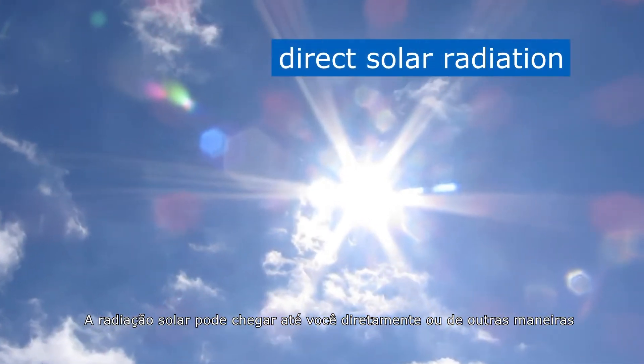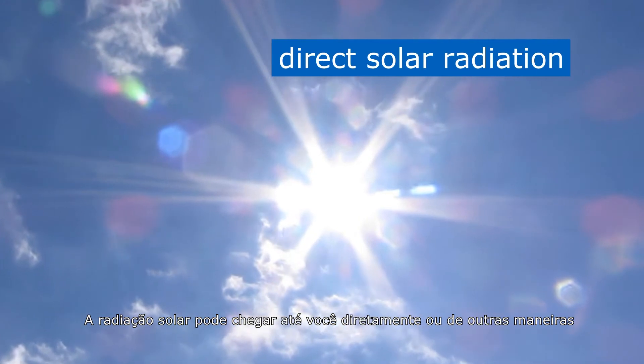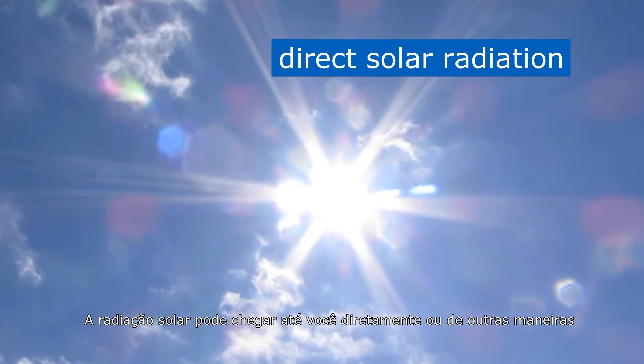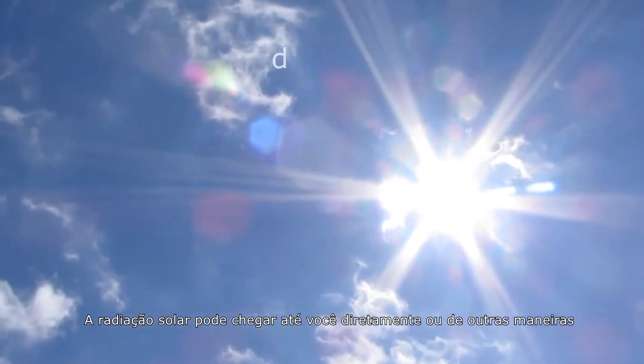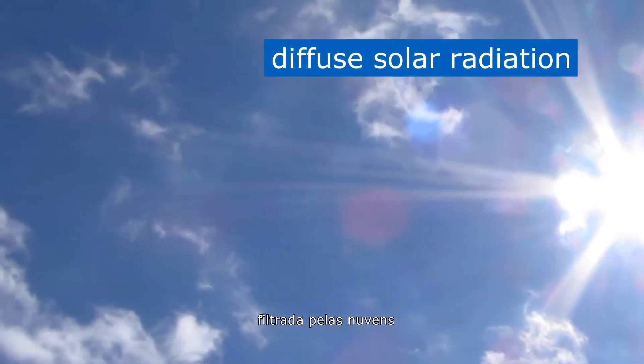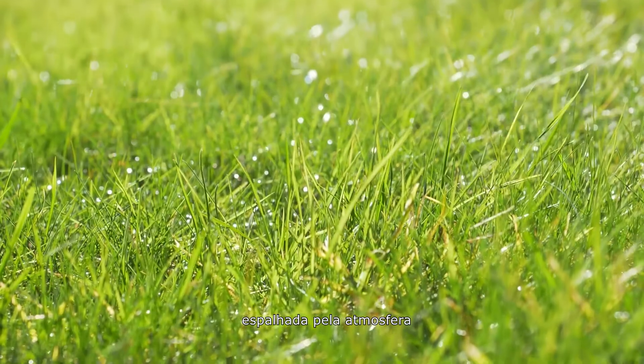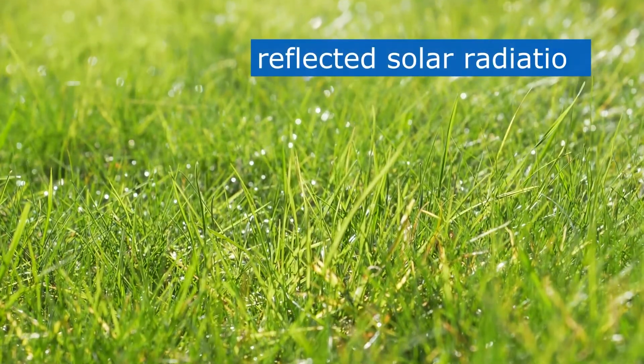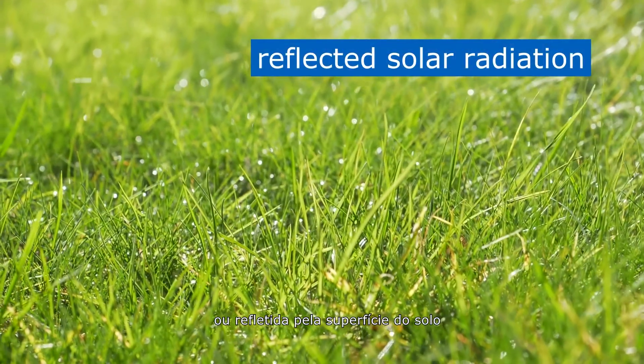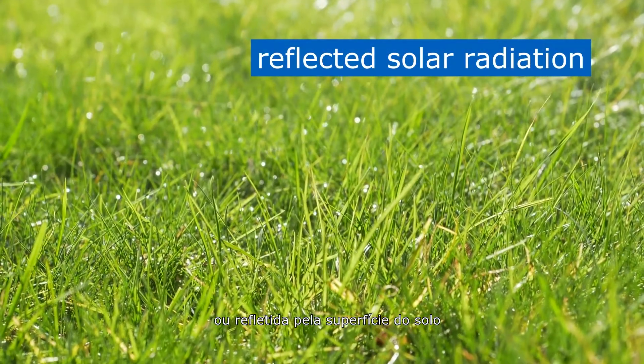Solar radiation can reach you directly or in other ways: filtered by clouds, scattered by the atmosphere, or reflected by the ground surface.